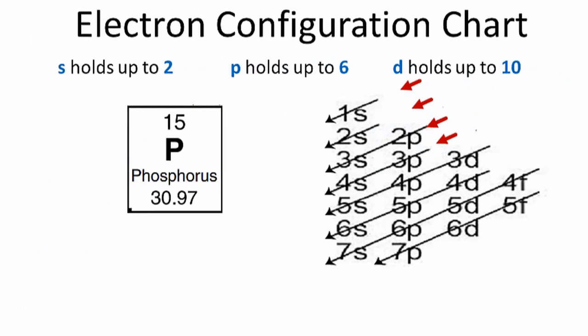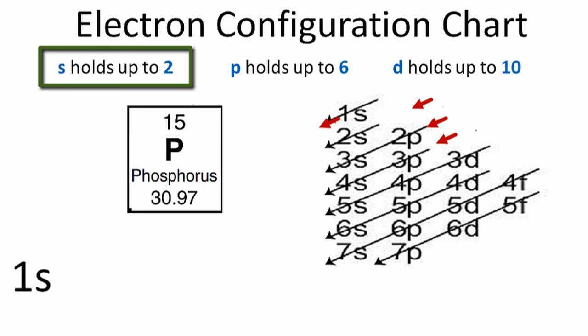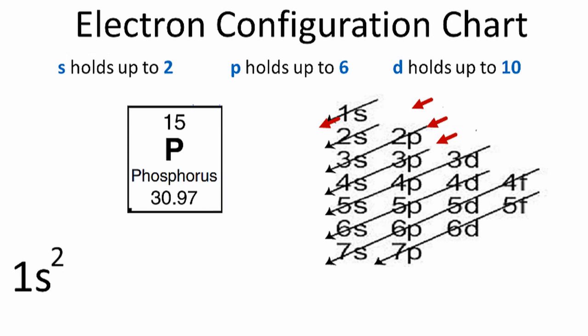For phosphorus, we have 15 electrons, so we'll use the chart on the right to figure out the electron configuration. We'll go down the first row and we have 1s. The first term is the 1s orbital. S orbitals can hold up to 2 electrons, so we'll put 2 in this first orbital.